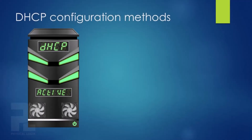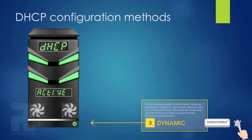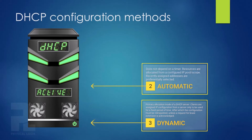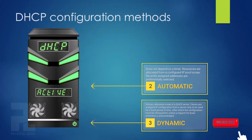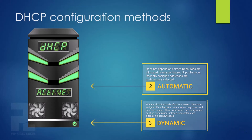Finally, DHCP supports all methods of configuring devices. First of all, it is primarily a dynamic configuration protocol and the working principles have been described earlier. DHCP support for automatic allocation ensures that a client permanently obtains IP address configuration from a pool of addresses. The server also maintains a record of past IP address assignments so that it can best assign the same address to the client on another request.